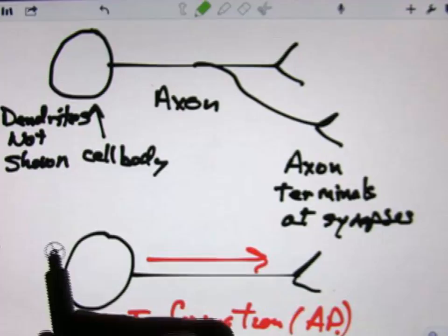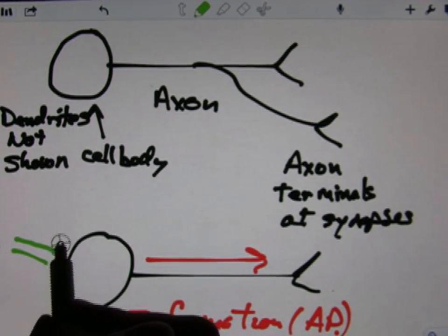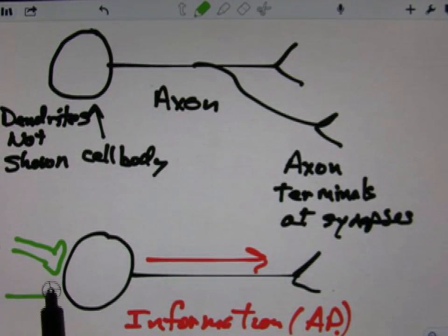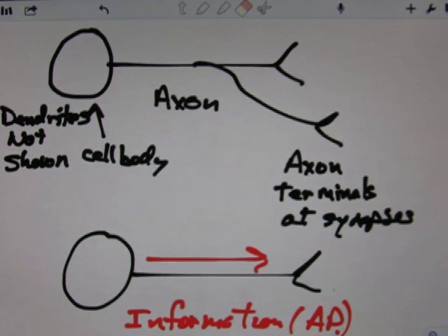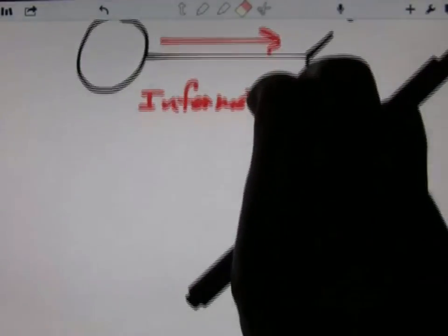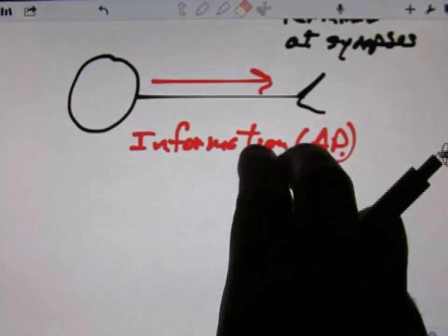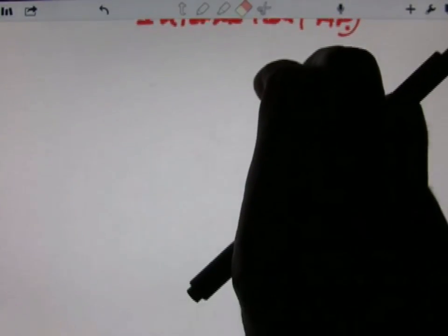Synapses can be on cell bodies. So what we draw instead is just the cell body and an axon and as many branches as we need. So when you draw these, that's the direction you should be presuming information is going to go.